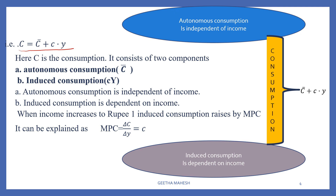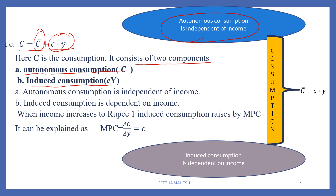The consumption equation formula is: C equals C-bar plus cY. That means consumption has two components. Autonomous consumption is independent of income. Induced consumption is dependent on income.